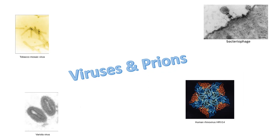Welcome to the next series of content videos. The next few videos will focus on viruses and prions. What these two types of microbes have in common is that they are not considered to be alive. When I say the term microbe, I'm using it very loosely to include all the different types of things that are microscopic. We're mainly looking at microscopic disease-causing entities. Technically, viruses and prions are not considered microorganisms because organisms refers to living things, and neither viruses nor prions are actually considered to be alive.